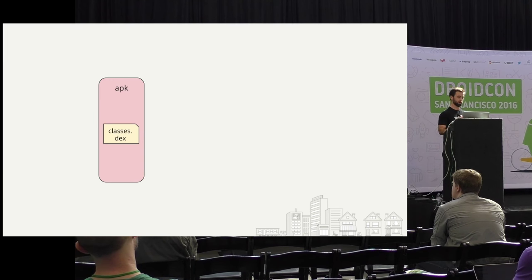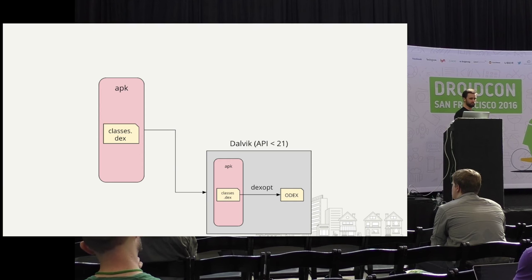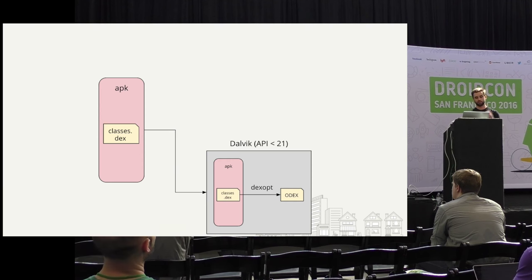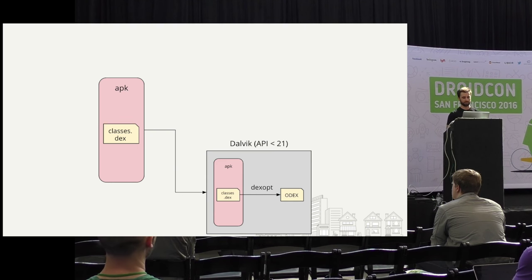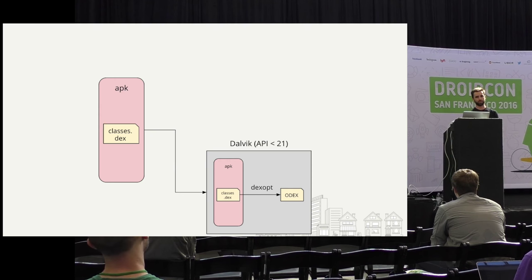What happens to get the APK on the device? It's different depending on Dalvik and ART. On Dalvik, which is API less than 21, first we copy the APK to the device — that's where resources are accessed from. Then a program called DexOpt runs, which takes your classes.dex file and turns it into an optimized dex file, or odex. DexOpt does a lot of things, but the key word is optimization. It might do things like inlining certain calls, or if you have an empty constructor, it'll replace that with a no-op instruction that's much more efficient.